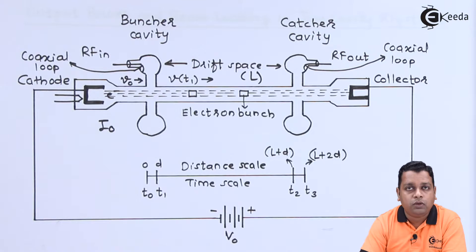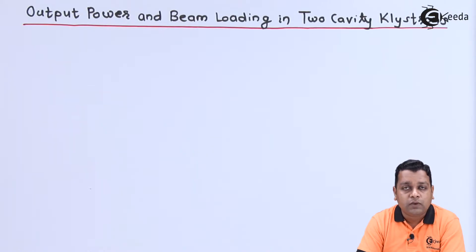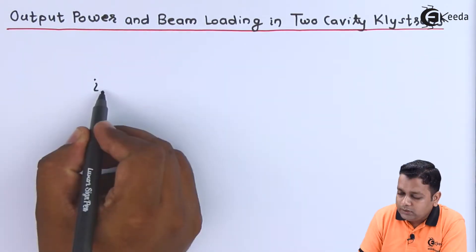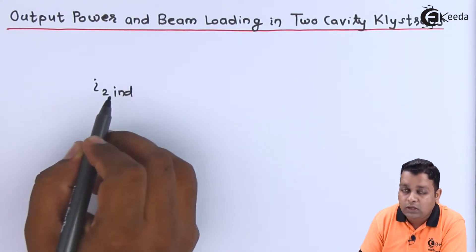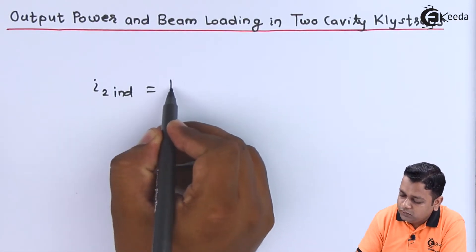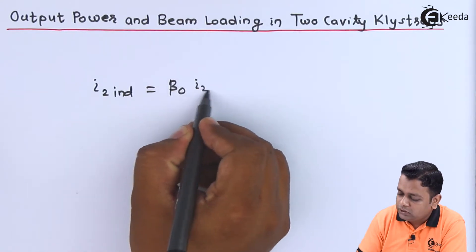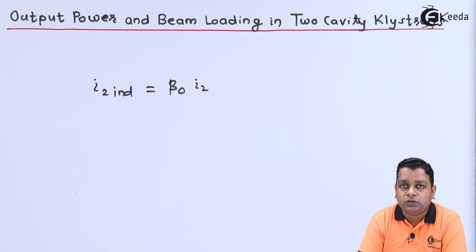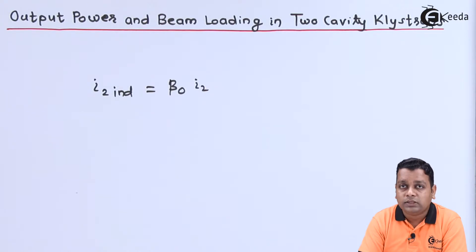In the earlier video, we derived the equation for the catcher cavity current denoted by I2. We carry that equation forward here. The induced current into the catcher cavity is written as I2 induced. This is equal to beta suffix O in multiplication with I2. In earlier derivations we used beta suffix I, where beta is the beam coupling coefficient. Since the buncher cavity is the input cavity, we used beta suffix I; now the catcher cavity is the output cavity, so we use beta suffix O.